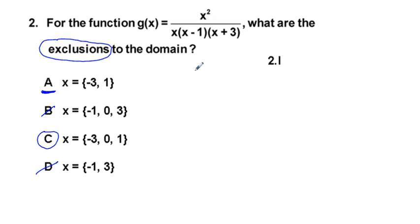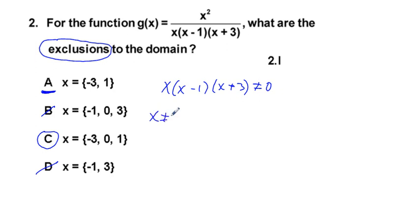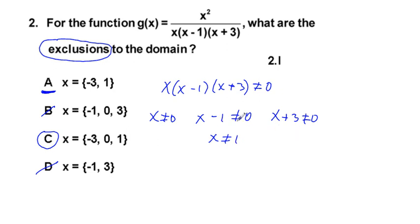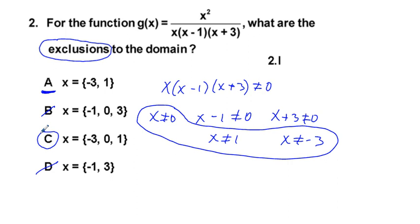Analytically, we set the entire denominator not equal to 0. By the zero factor property, each factor must also be not equal to 0: x ≠ 0, x − 1 ≠ 0 (so x ≠ 1), and x + 3 ≠ 0 (so x ≠ −3). These three equations define our exclusions to the domain, making C the correct answer.